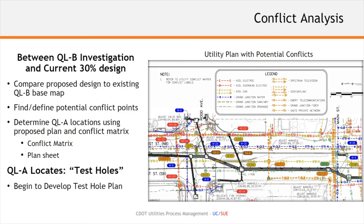At this point, we're really trying to identify where test holes are appropriate and where design modifications can be made. Once all this data is captured, it will be shown in the utility conflict matrix.